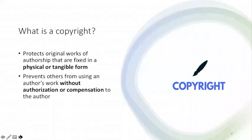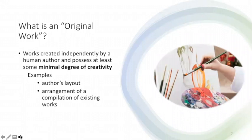So what exactly is a copyright? A copyright is a property right that protects original works of authorship that are fixed in a physical or tangible form. Copyrights serve as a means to prevent others from using an author's work without permission or compensation to the author. In the context of copyright law, original works are created by a human author and possess at least some minimal degree of creativity.